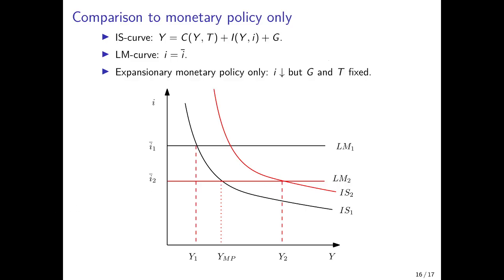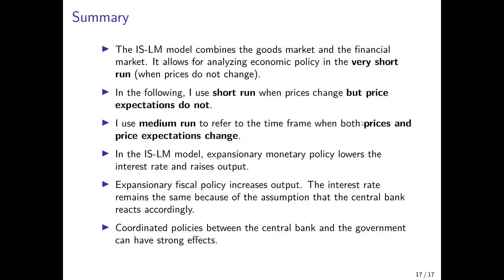To summarize, the ISLM model combines the goods market equilibrium and the financial market equilibrium, allowing analysis of economic policies in the very short run when prices are not yet allowed to change because firms do not have time to react. I use 'short run' for when prices change but not fully with price expectations, 'medium run' when prices and price expectations both adjust to the new equilibrium, and 'long run' when money is completely neutral. Both expansionary monetary and fiscal policies can increase output, and coordinated policies are even more effective in fighting a recession.